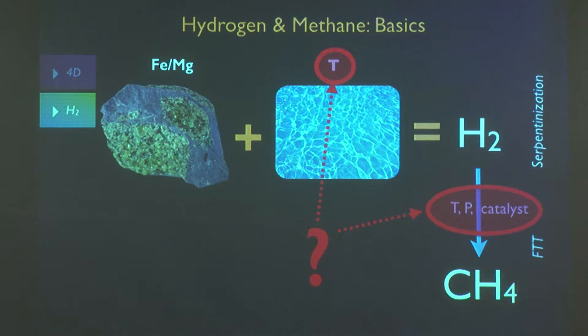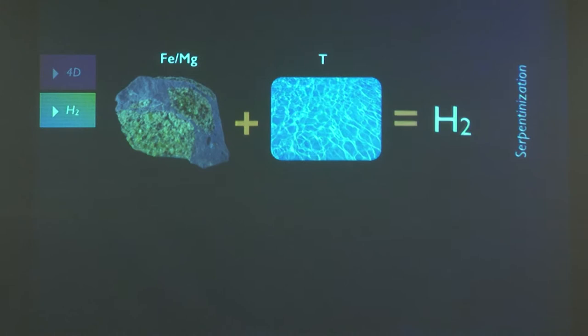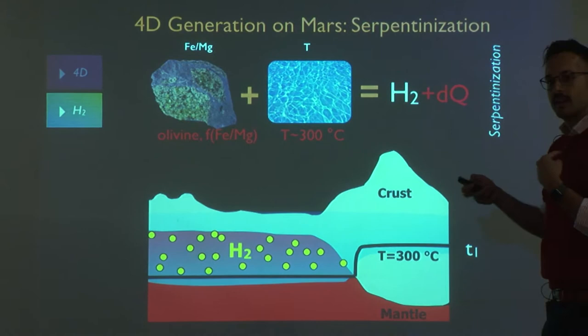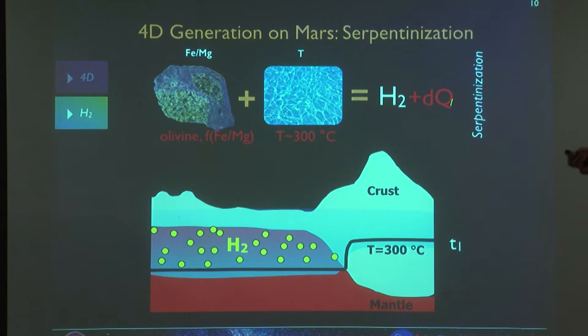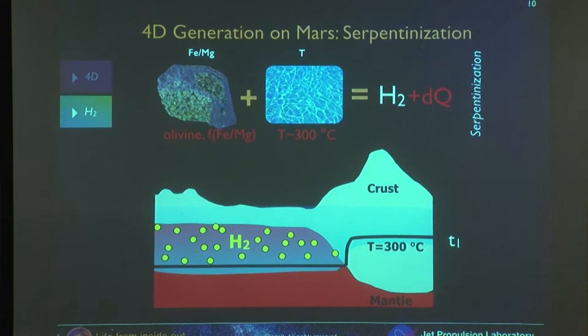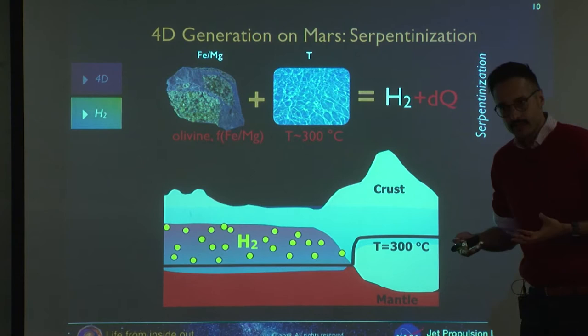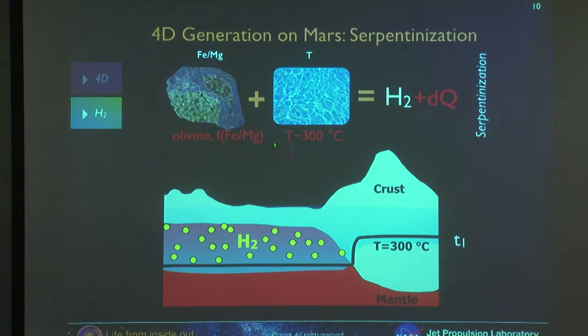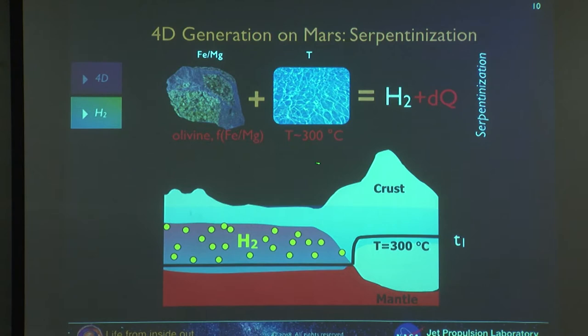For methane production, through Fischer-Tropsch type synthesis we can generate methane and other complex molecules from hydrogen, but that's even more complicated because it depends a lot on temperature, pressure conditions, and catalysts. Now, if we go to Mars and look just at the serpentinization process: we have an evolving planet and we look at where the conditions are satisfied for liquid water to exist and where the temperature and pressure conditions are correct for this chemical reaction where olivine generates hydrogen.